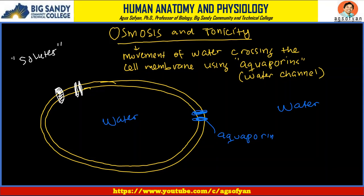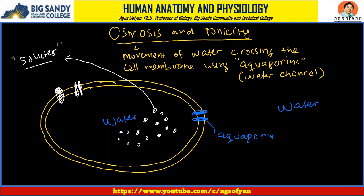Which concentration is higher? Let's say the solute concentration is higher inside the cell. Then the water will try to dissolve those solutes, so water from outside will rush into the cell in order to dissolve them until it reaches balance. This movement of water is osmosis — it moves based on solute concentration.